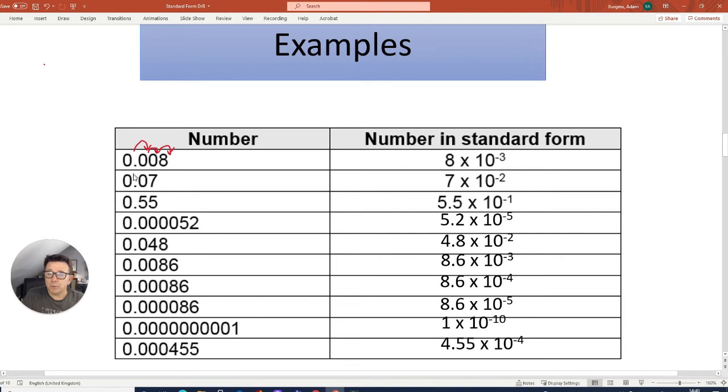0.07 is 1, 2, so that's 7 times 10 to the minus 2. Now this one's different. You've got to have it between 0 and 9.9, so this is 5.5 times 10 to the minus 1. Next one: 1, 2, 3, 4, 5, so 5.2 times 10 to the minus 5. This one will be 4.8 times 10 to the minus 2. And 1, 2, 3, 8.6 times 10 to the minus 3.